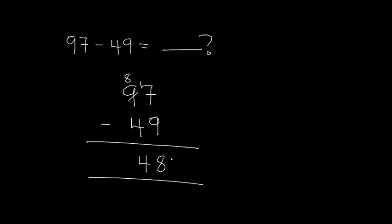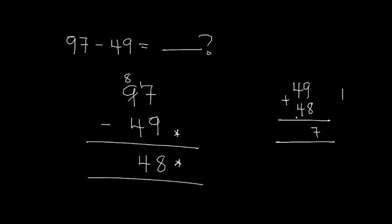Let's verify: to check we add 49 plus 48. 9 plus 8 gives us 17, so I write 7 and carry 1. That 1 plus 4 gives 5, and 5 plus 4 gives 9, which equals 97 — the same as the number we started with. So thank you so much for watching. This is how we do simple subtraction of two-digit numbers. I will see you in the next video, bye bye.